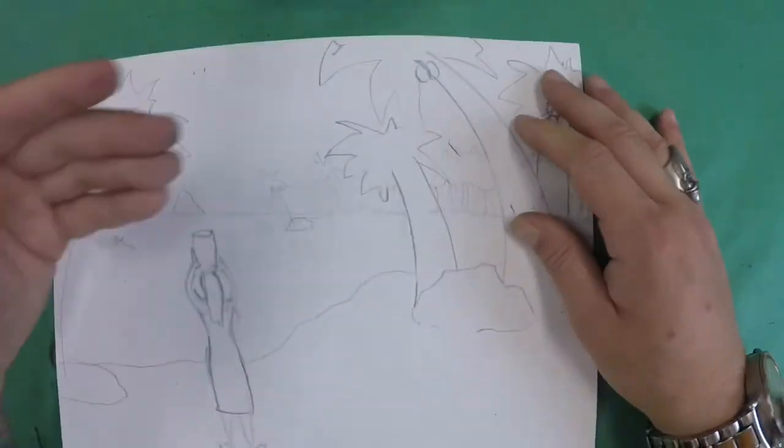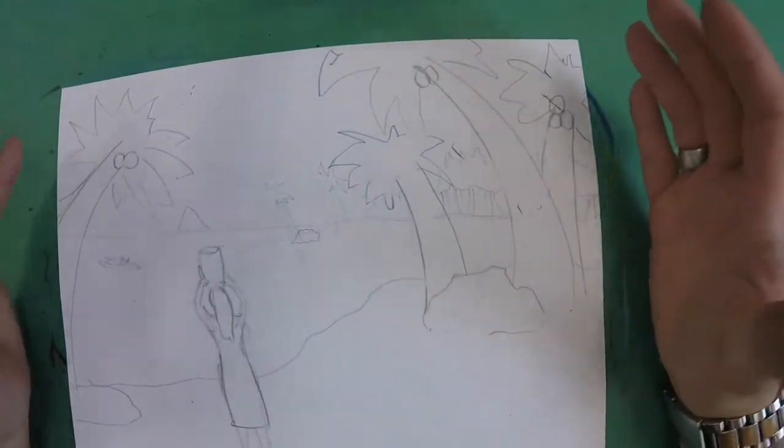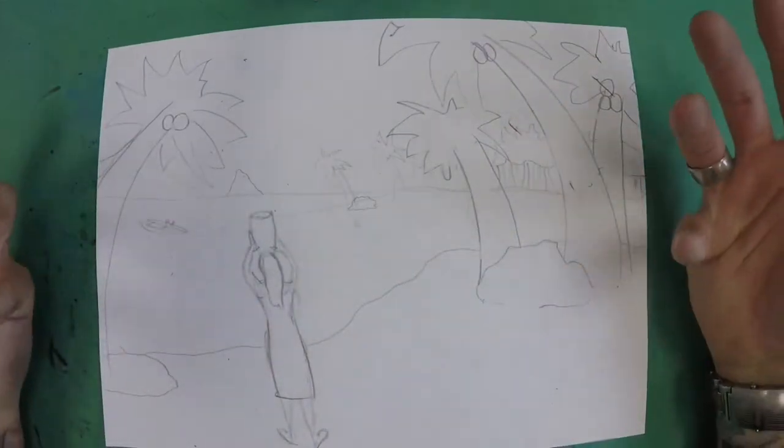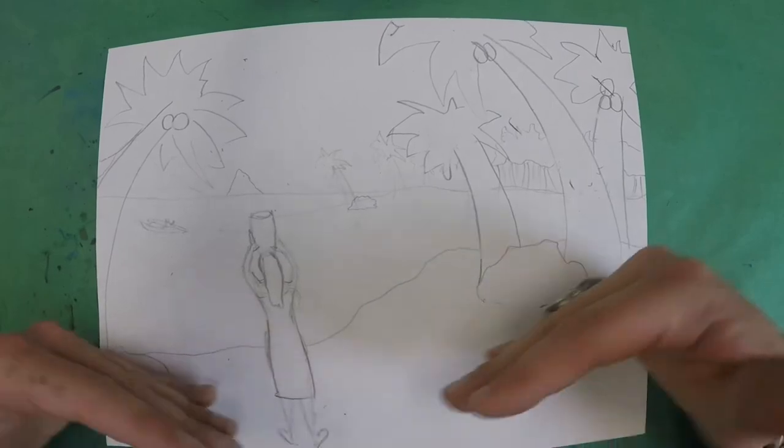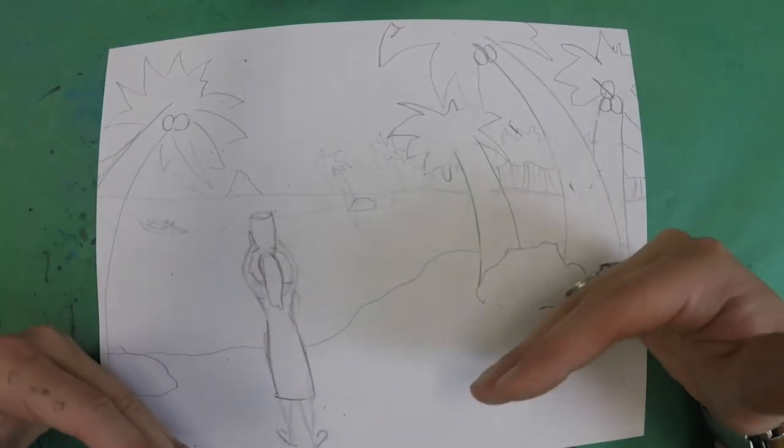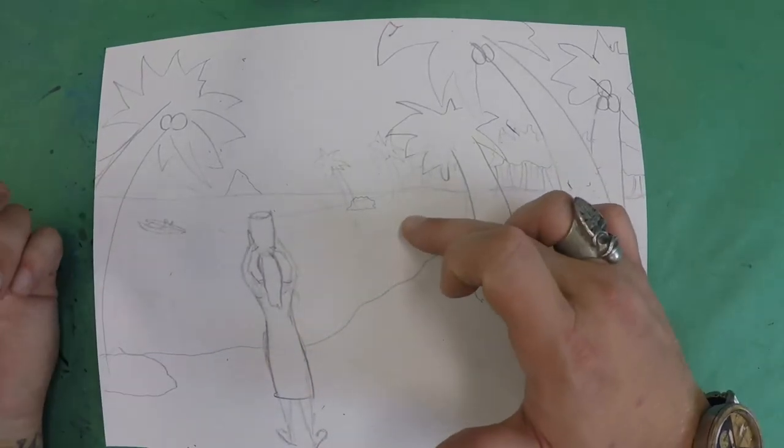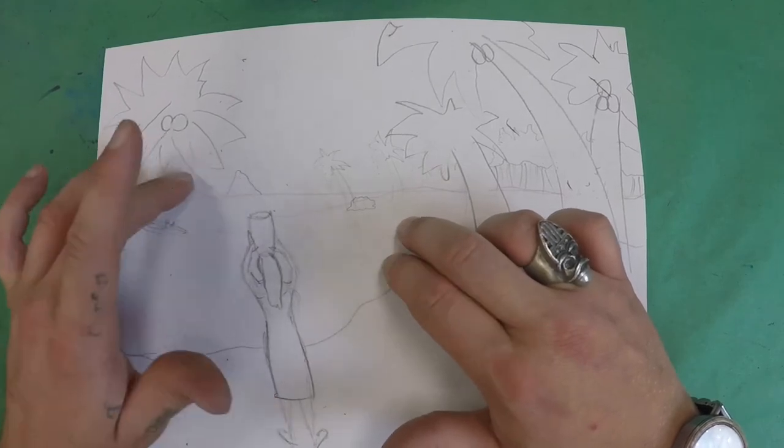And as we work from the background to the foreground, we create this depth. We create this space so that we see, and when we look at it, we read it as these things being close to us, and then these things being a little bit farther away, and then these islands back here in the distance being very, very far away from us.